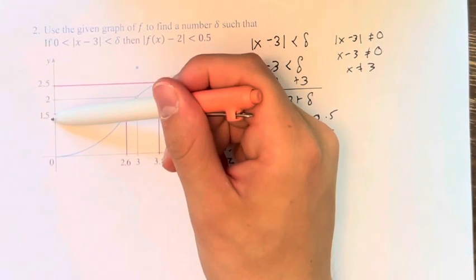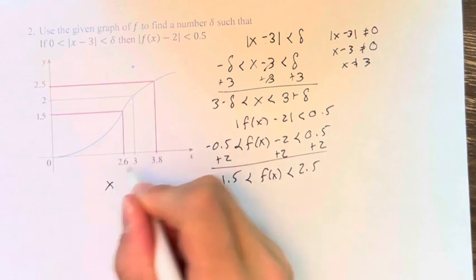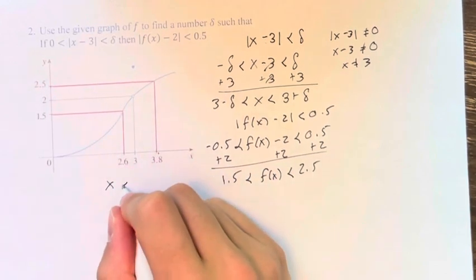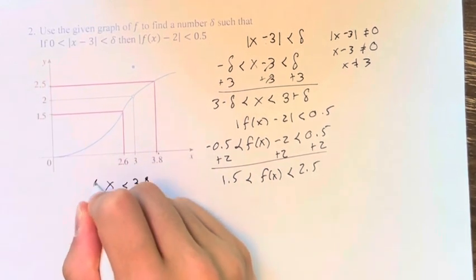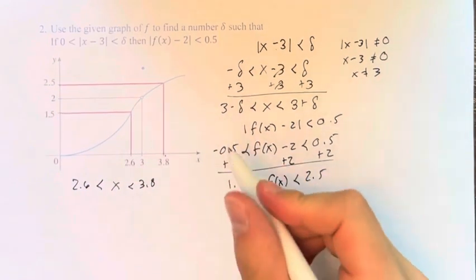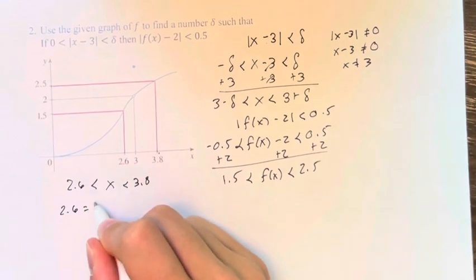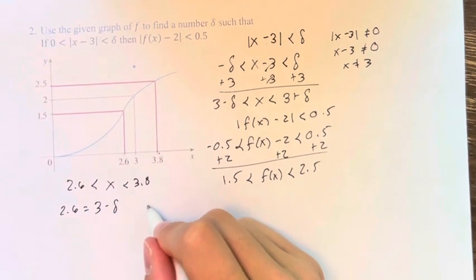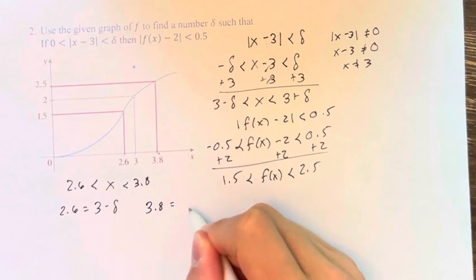We're saying how much away from 3 do we have to go before we find values of x that output values of f of x that are not within this range. So if we see that to be between 1.5 and 2.5, x has to be between this point, 3.8, and this point, 2.6.